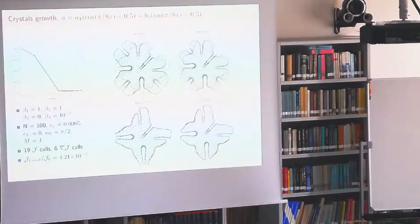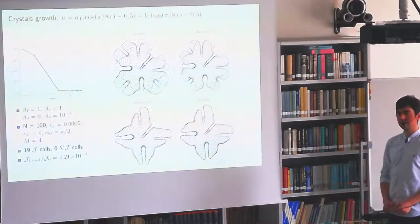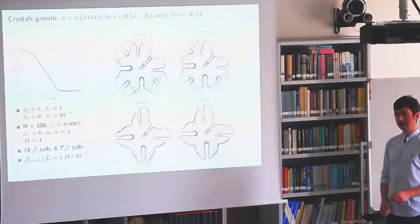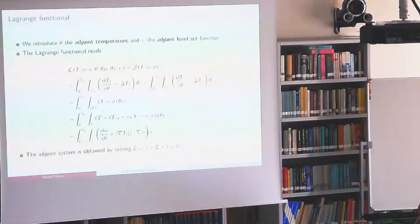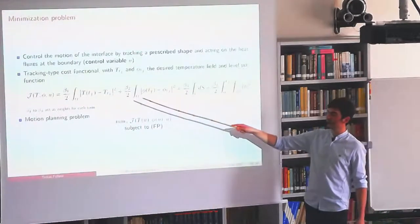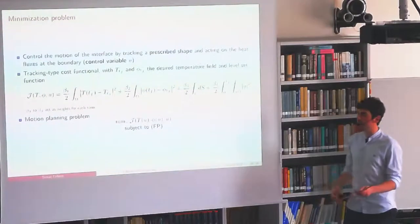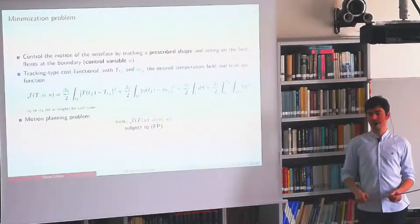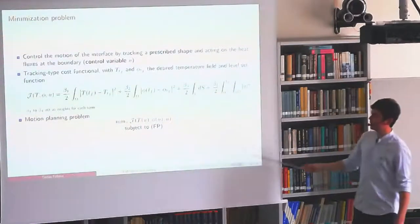In the Q&A, a question is raised about whether the method iterates the full time-dependent problem by tuning boundary conditions, advancing forward, computing the cost function, and repeating. The answer is yes. A follow-up clarifies that the optimization targets only the final shape — the cost functional is evaluated at final time tf — not tracking the entire trajectory. Integrating over the whole time span would track the trajectory through time, but that is not the current formulation.